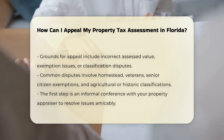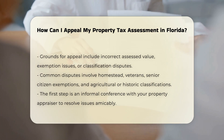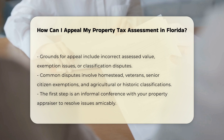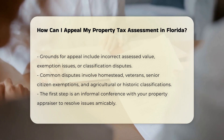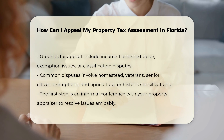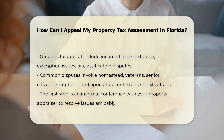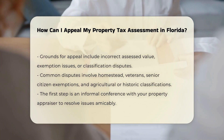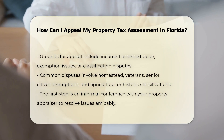The first step in the appeal process is to hold an informal conference with your property appraiser. This provides an opportunity to resolve the issue amicably without further formal procedures. During this conference, you should bring any documentation that supports a change in the assessment, such as recent sales of comparable properties or evidence of property damage.